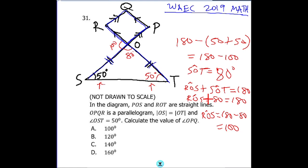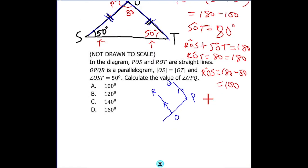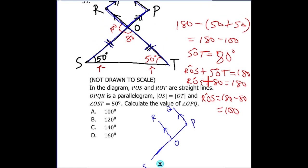Looking at this shape, line RO is parallel to line QP. The line joining R through O down to S is a transversal, so we are going to have a corresponding angle. So 100 degrees here as angle SOR — or ROS, whichever you call it. Since SOR and ROS are the same, 100 degrees equals angle QPO or OPQ.